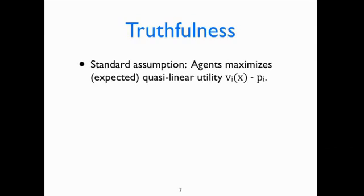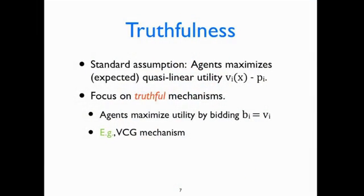As a standard assumption in game theory and microeconomics, we assume that agents aim to maximize their expected utility, which has the quasi-linear form: the valuation of the outcome chosen by the mechanism minus the payment charged to the agent. The agent will lie if lying can increase this quasi-linear utility. A truthful mechanism is one where agents always maximize quasi-linear utility by bidding their true value, no matter what the other agents do.